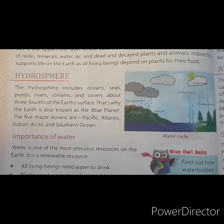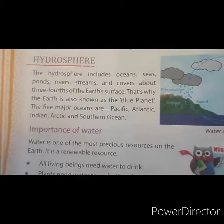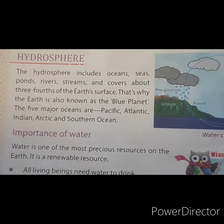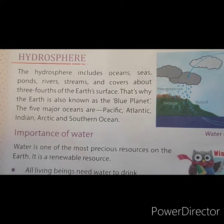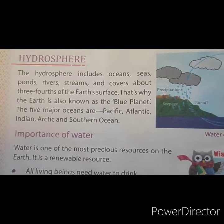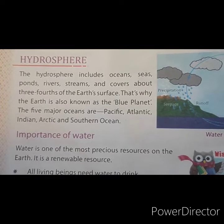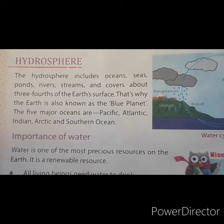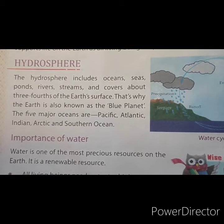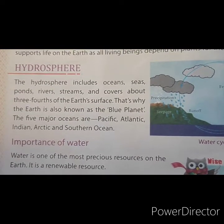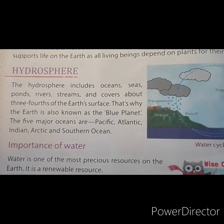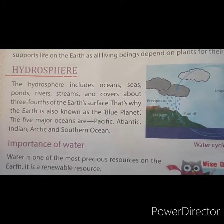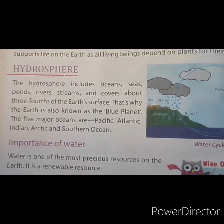Now, hydrosphere. Hydro means water. The hydrosphere includes oceans, seas, ponds, rivers, and streams, and covers about three-fourths of the earth's surface. That is why the earth is also known as the blue planet. If you see our planet earth from space, it looks blue in color, because water covers three-fourths of the earth's surface.